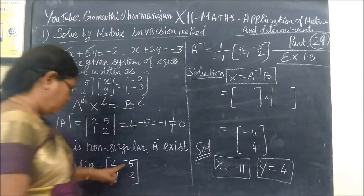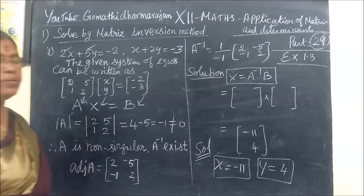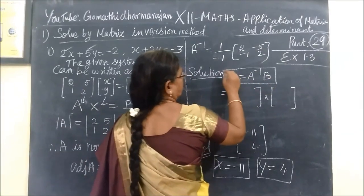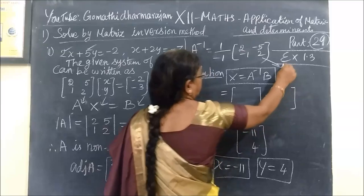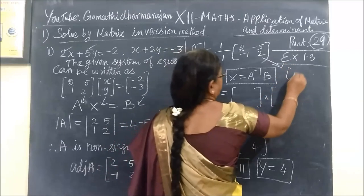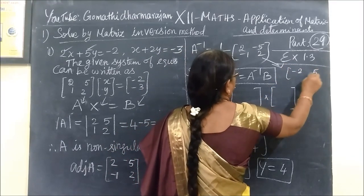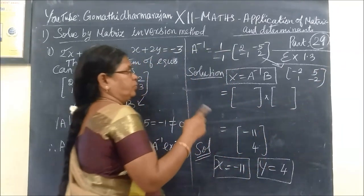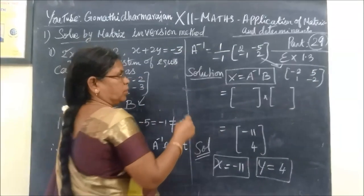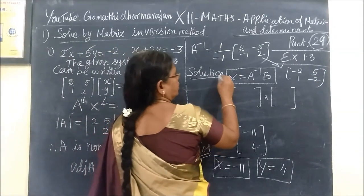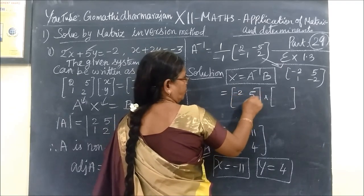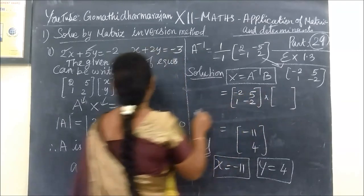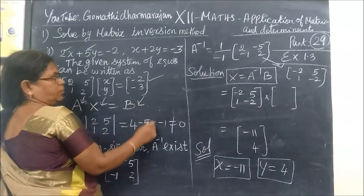So 1 by determinant A is minus 1. Adj(A) is the matrix: 2, minus 5, minus 1, 2. Then with the minus sign applied, in the index of 1 by determinant A, we get minus 2, 5, 1, minus 2.